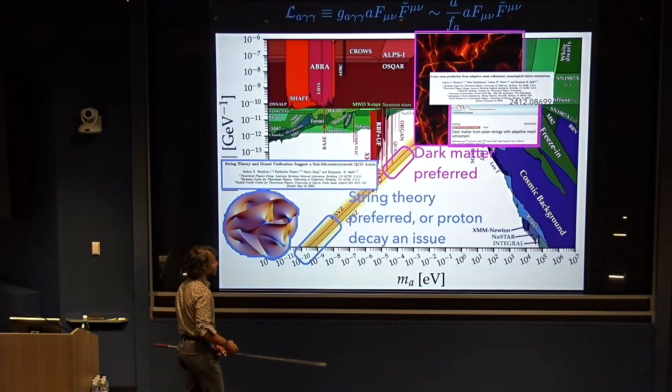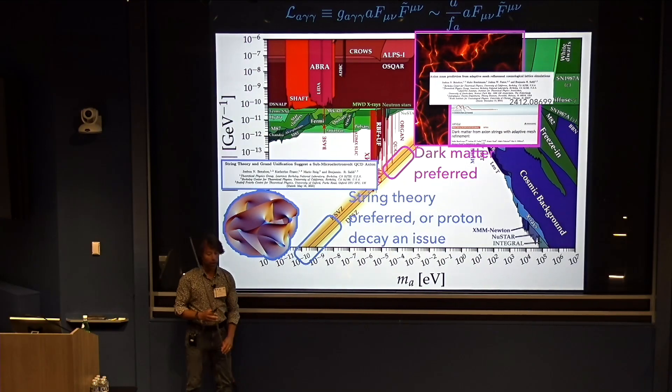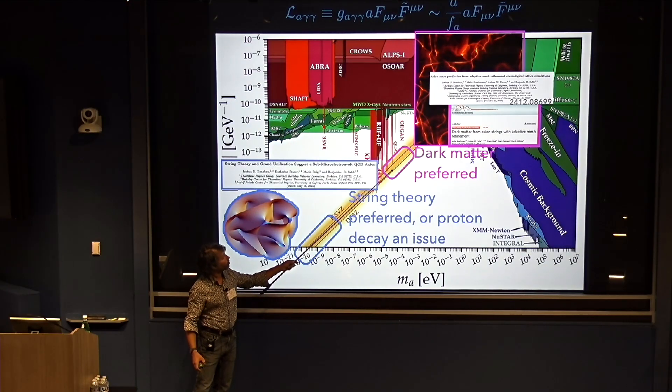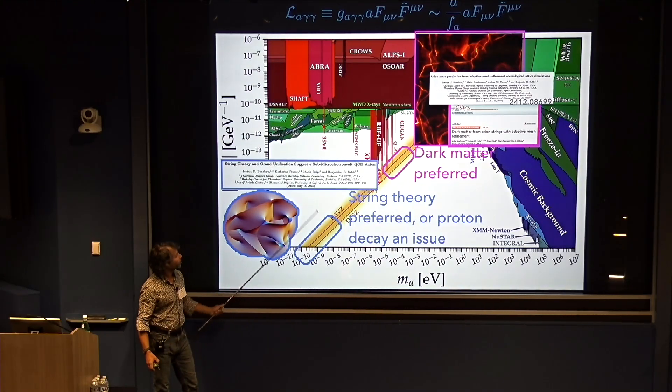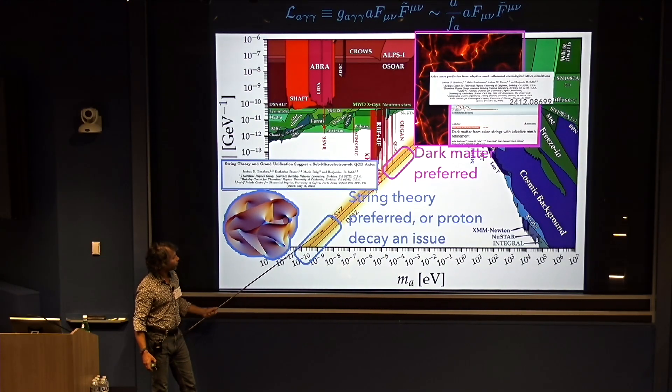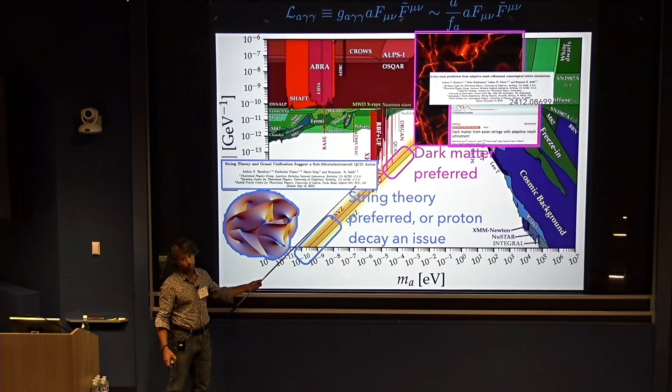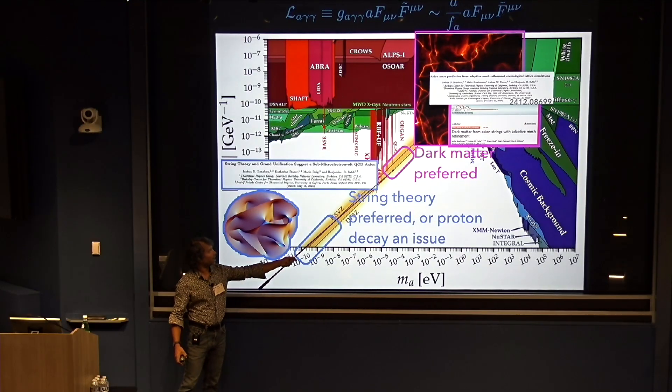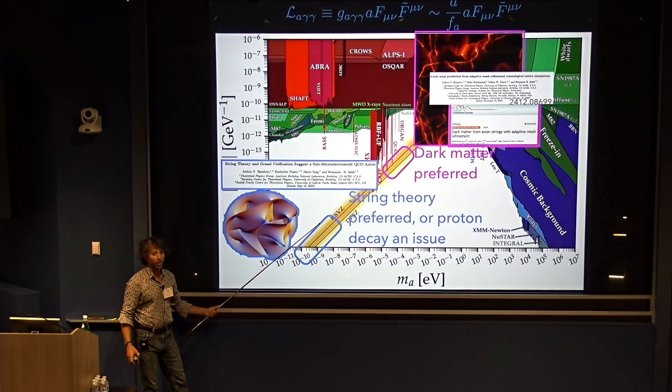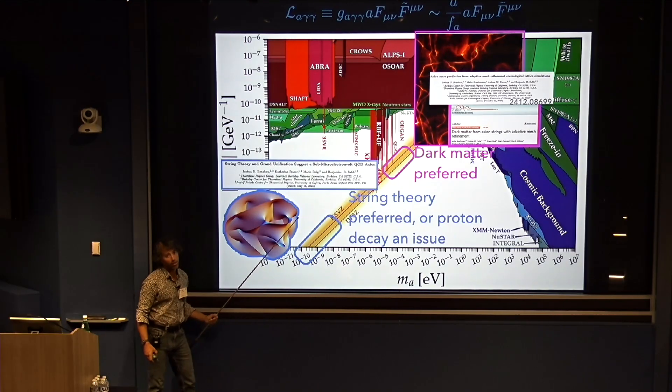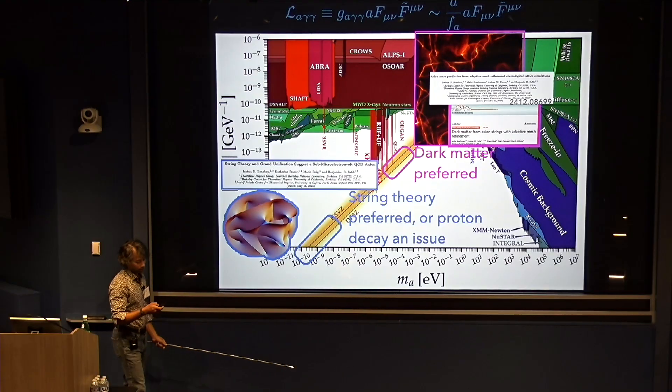All of this to say that there are two, in my mind, preferred mass ranges for the axion to live. Up here is the range where we find that axion dark matter is most naturally explained. On the other hand, you can also argue, and this is something we've argued recently in my group, that string theory actually prefers a lower mass range because when you go up in mass in string theory, you start to run into issues of proton decay. This does not mean that string theory can't explain axions here or that dark matter couldn't be explained down here. But in both cases, it's slightly non-trivial. So in my mind, what we need to be doing at an experimental level is looking over this entire parameter space. But there's something non-trivial that we're going to learn no matter where the axion shows up.